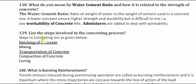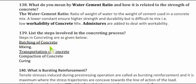Question 139: List the steps involved in the concrete construction process. The steps in concrete construction are: batching of concrete, mixing, transportation of concrete, compaction of concrete, and curing.